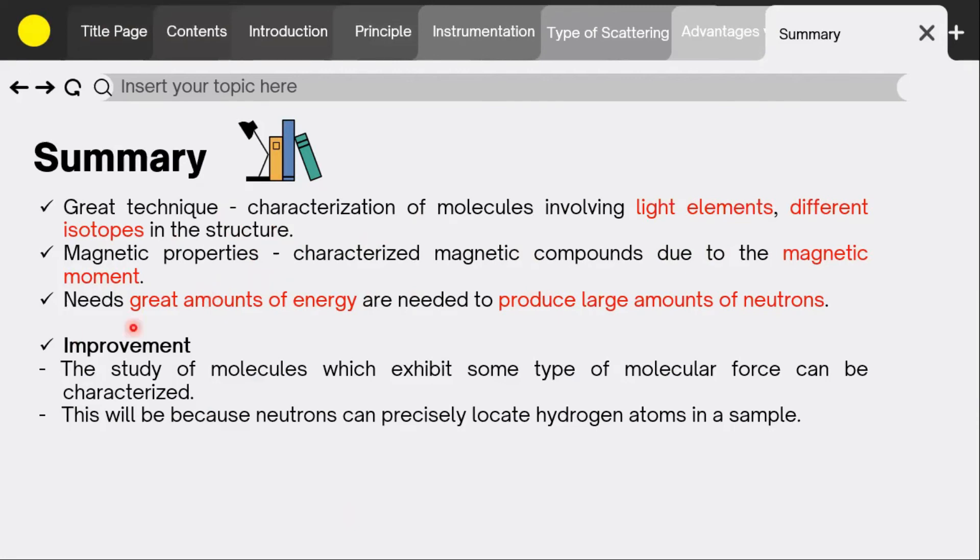There are several disadvantages as well. One of the most critical is that neutron diffraction experiments need a great amount of energy to produce large amounts of neutrons. The properties and advantages of this technique can greatly increase if some of the disadvantages are solved. For example, the study of molecules which exhibit some type of molecular force can be characterized. This will be because neutrons can precisely locate hydrogen atoms in a sample.